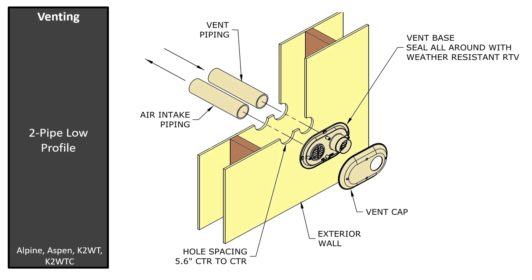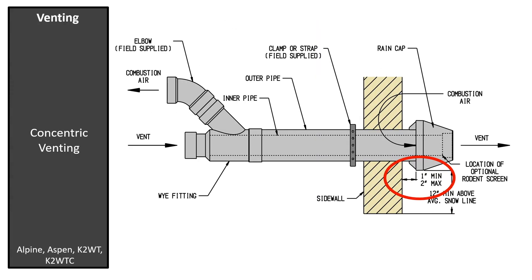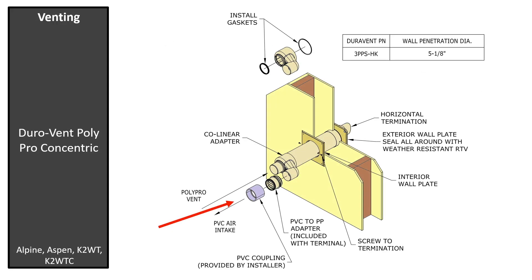Low profile venting can be installed with the vent termination on the left or the right if installed horizontally. If installed vertically, the vent termination must be at the top. Do not install the vent terminal at the bottom due to cross contamination of the flue gases. When concentric sidewall venting, the distance from the concentric air inlet to the wall must be a minimum of 1 inch and a maximum of 2 inches. The polypropylene concentric kit includes a polypropylene to PVC adapter for the air inlet. The vent must remain rigid polypropylene back to the boiler.